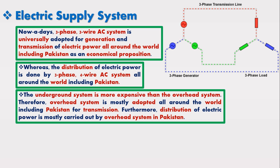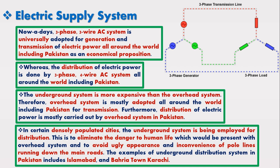However, in certain densely populated cities, the underground system is being employed for distribution. This is to eliminate the danger to human life which would be present with the overhead system and to avoid the ugly appearance and inconvenience of power lines running down the main roads. Examples of underground distribution systems in Pakistan include Islamabad and Bahria Town, Karachi.